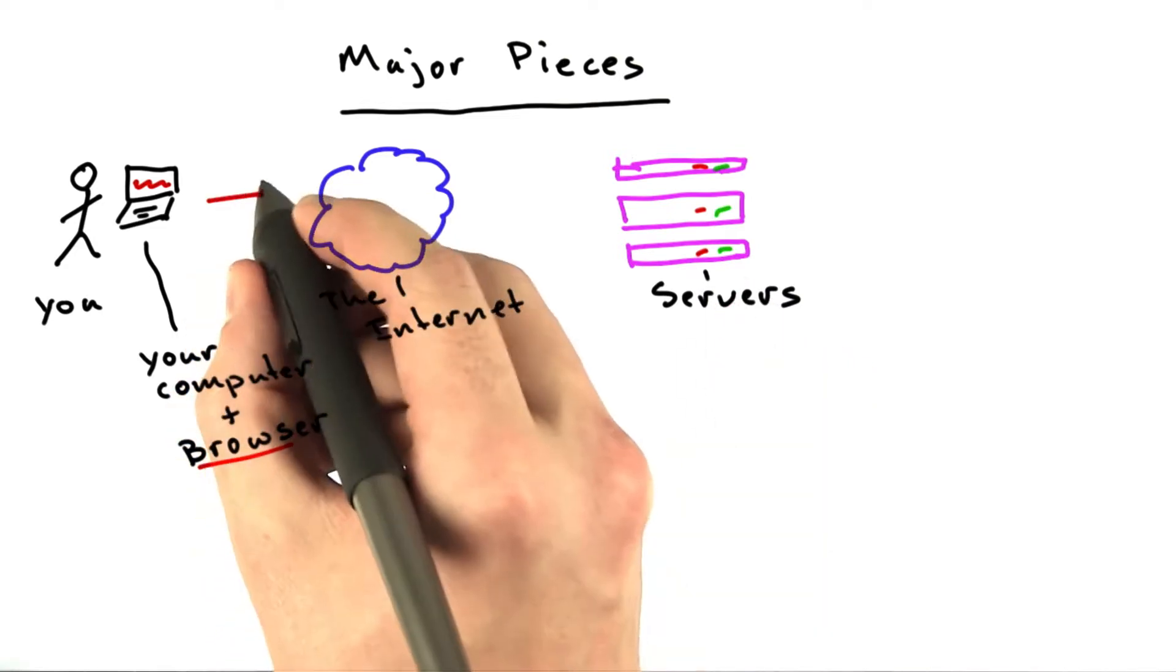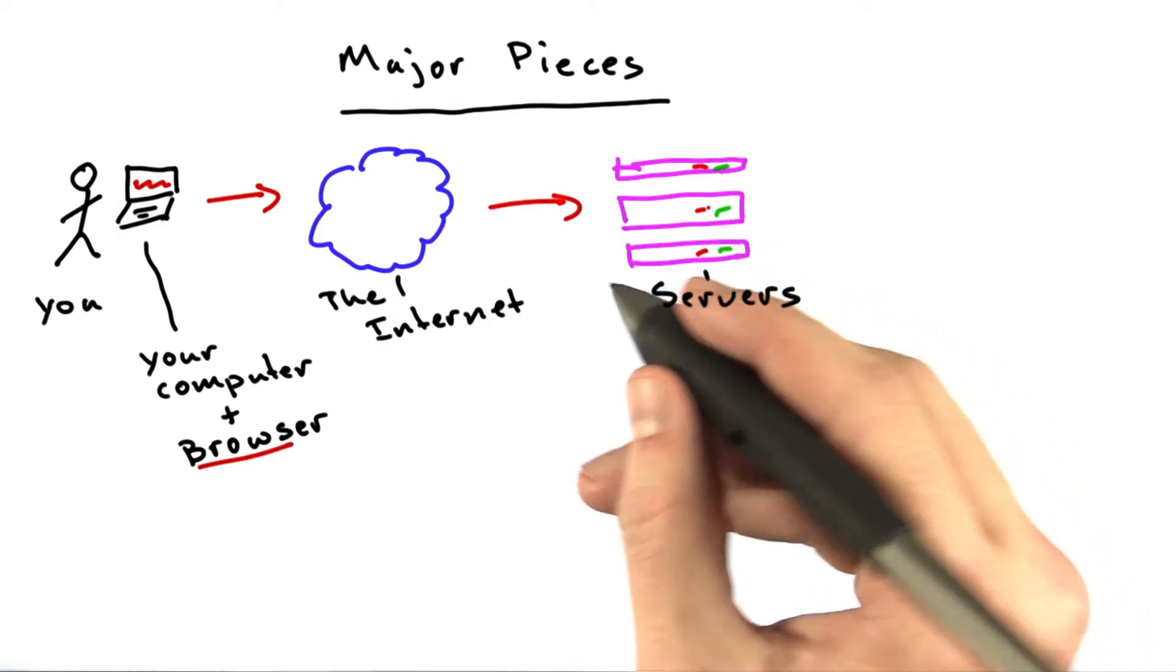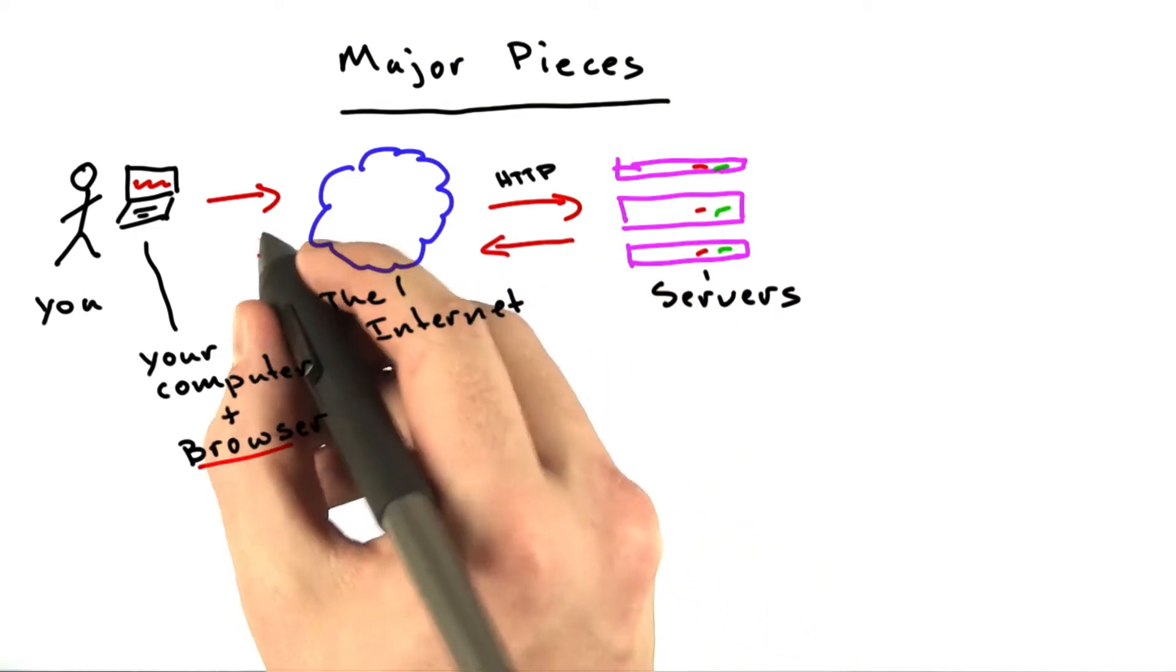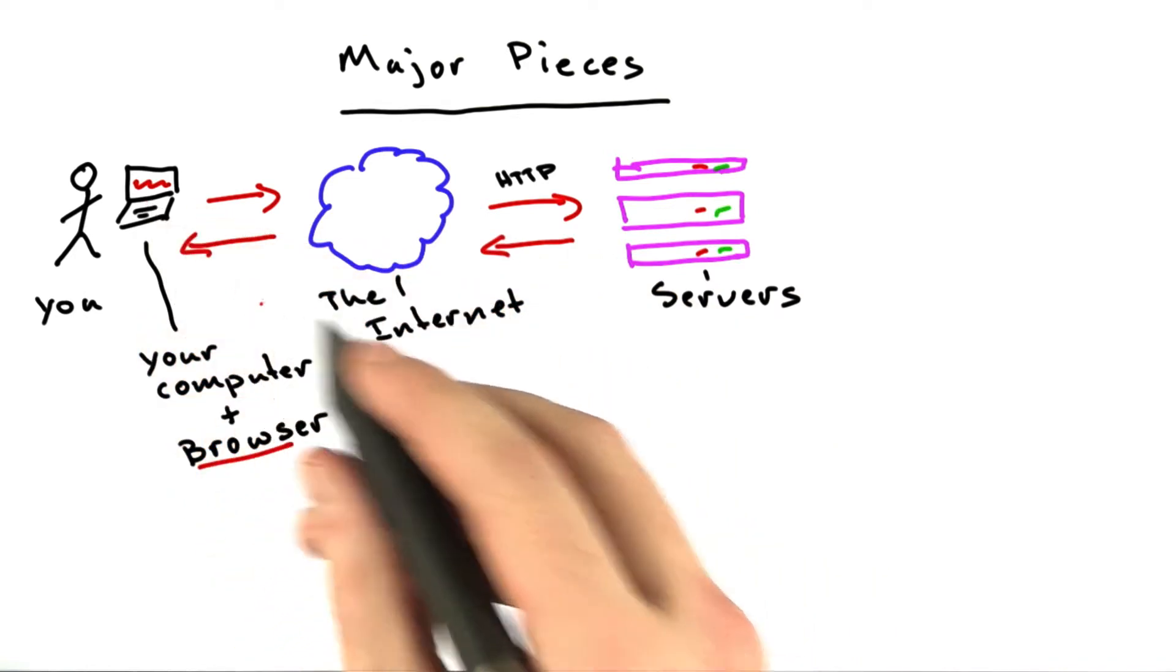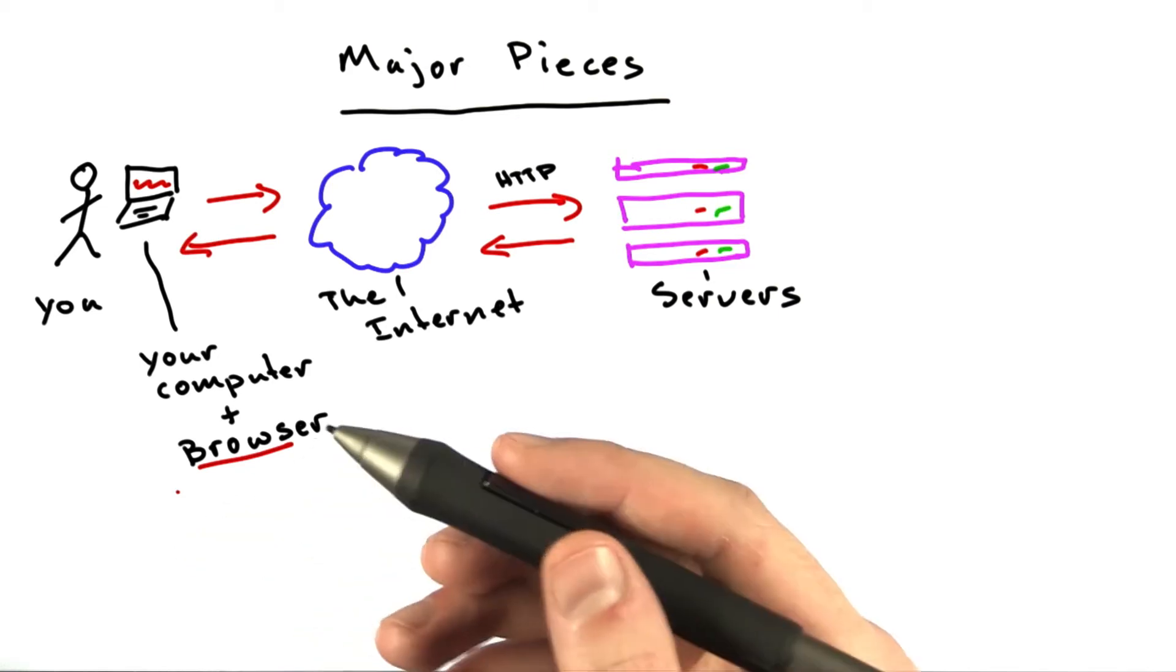Your browser makes requests via the internet to servers. These requests are using a protocol called HTTP, and the servers respond with files that your browser displays. Some examples of browsers are Internet Explorer, Chrome, and Firefox. You're probably running one of those right now.